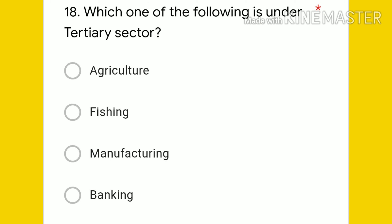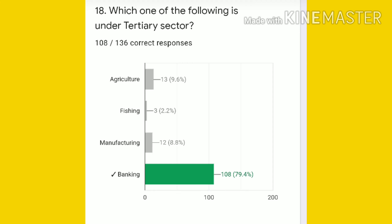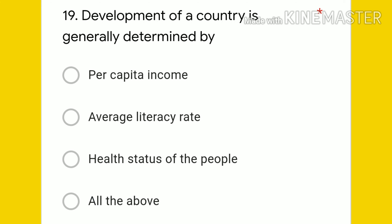Question 18: which one of the following is under the tertiary sector — agriculture, fishing, manufacturing, or banking? The answer is banking, also known as the service sector. 108 students gave the right answer. Some students chose agriculture and fishing, but those do not belong to the tertiary sector.